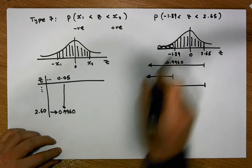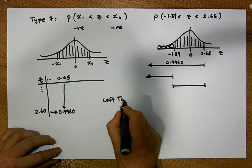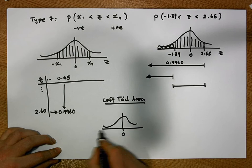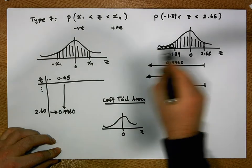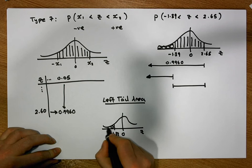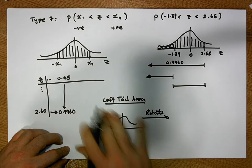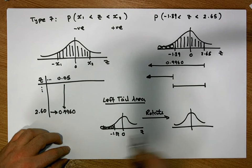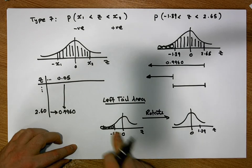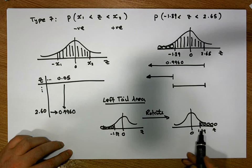Let's concentrate on the left tail area. The curve is centered on zero with the z-axis as the horizontal axis, and the tail area is bounded above by minus 1.39. We can never look up negative values directly, but we can always rotate the curve. When we rotate it, minus 1.39 becomes 1.39, and the tail area on the left becomes the tail area on the right. So the question becomes: what is the area in the right-hand tail above 1.39?